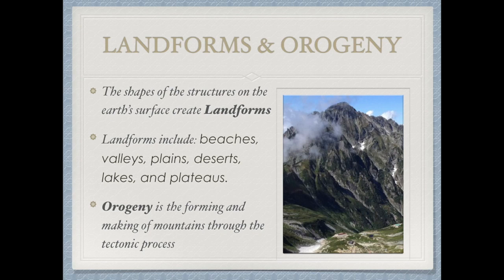Orogeny is usually going to be forming through tectonic plates. When we have subduction, mountains and volcanoes will form because of convergence. When we have continent-to-continent convergence, mountains are formed. If we have two oceanic plates converging, we can form a trench — so many different landforms are being created.